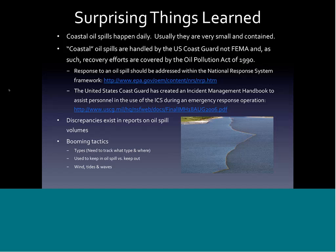We learned a tremendous amount about booming — there are a number of different types of booms. During the Deepwater Horizon incident, GIS professionals spent almost all their time tracking the type of booms, where they were put out, and when. Booms are used to keep oil out of sensitive areas or contain it in smaller incidents. There is a minimal amount of wind, tides, or waves that can impact boom effectiveness. While you may have them deployed, they can become less effective depending on atmospheric conditions.